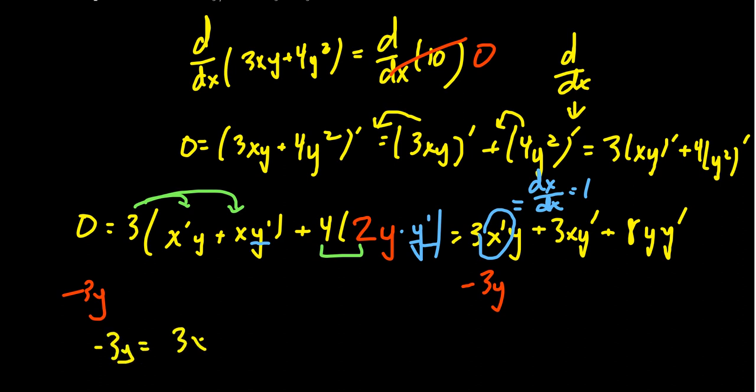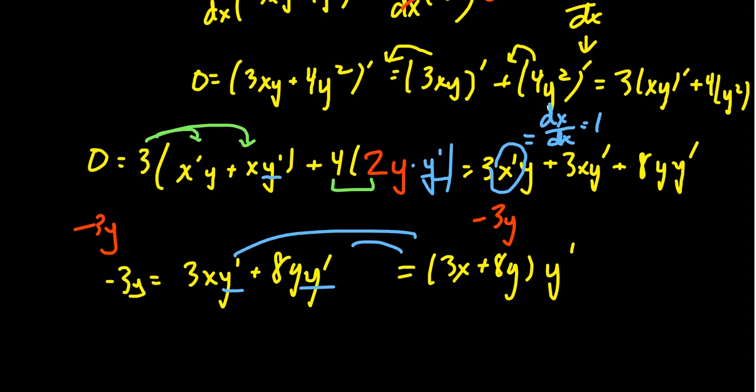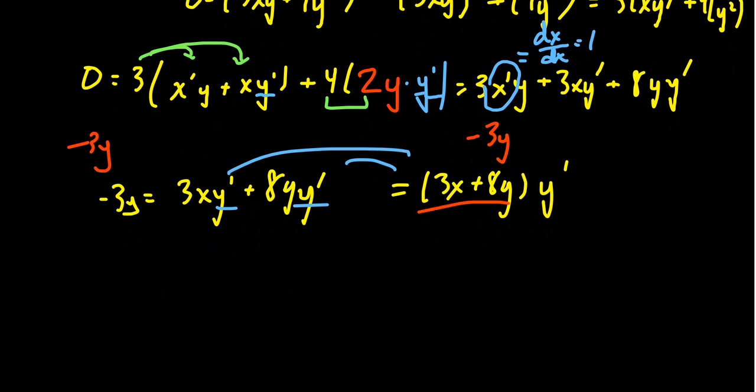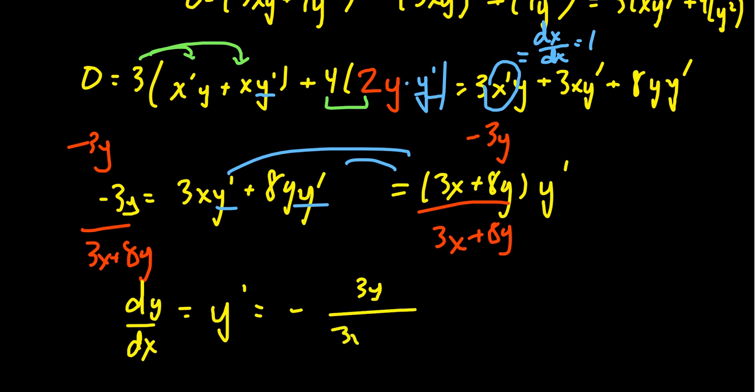On the right-hand side, we have the 3x y prime plus 8y y prime. And then recognizing the derivative here as a common multiple, we can factor it out, thus making the right-hand side look like 3x plus 8y, multiply that by y prime. And so then to solve for y prime, we need to divide by its coefficient. That is, we need to divide both sides by 3x plus 8y. So in the end, we get that y prime, which of course is just an abbreviation for dy over dx, is equal to negative 3y over 3x plus 8y.